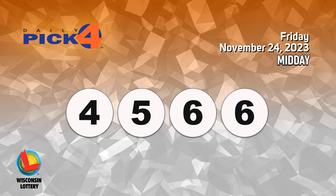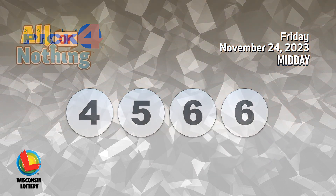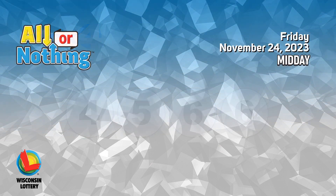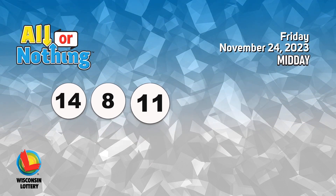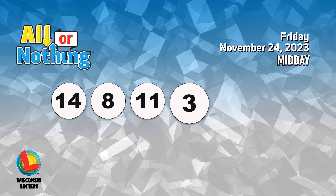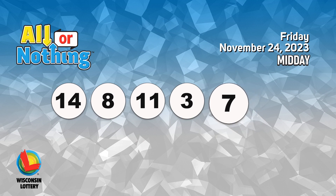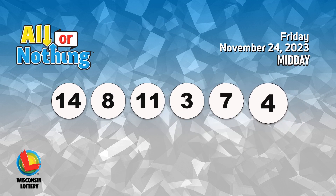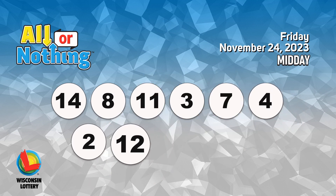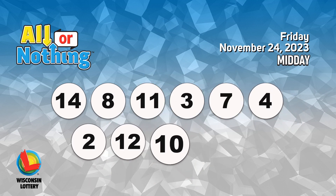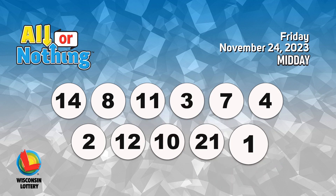The All or Nothing numbers are fourteen, eight, eleven, three, seven, four, two, twelve, ten, twenty-one, one.